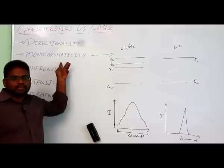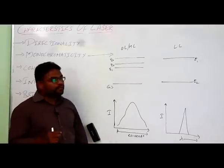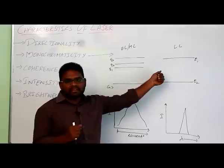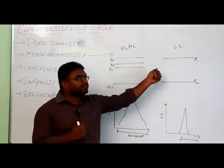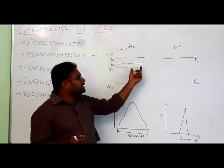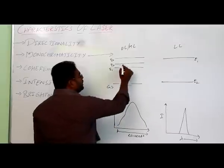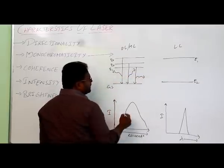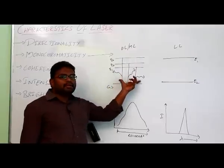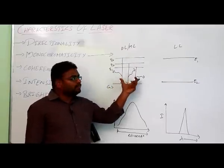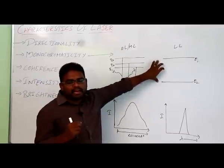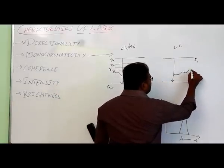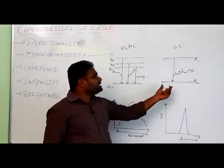The second characteristic is monochromaticity, meaning a single wavelength. In ordinary or monochromatic light like a sodium vapor lamp, transitions occur between different energy levels to the ground state. This causes photons of different wavelengths to be emitted through spontaneous emission, giving multiple wavelengths. In laser light, the transition occurs between two fixed energy levels, so a fixed wavelength of photons is emitted.